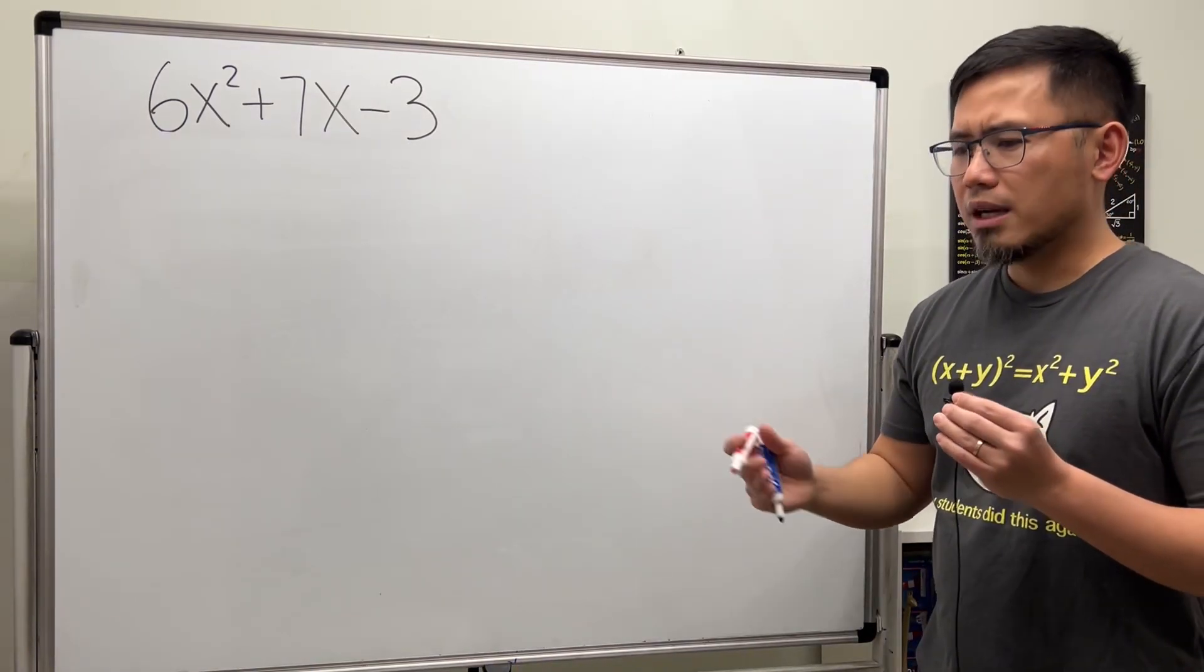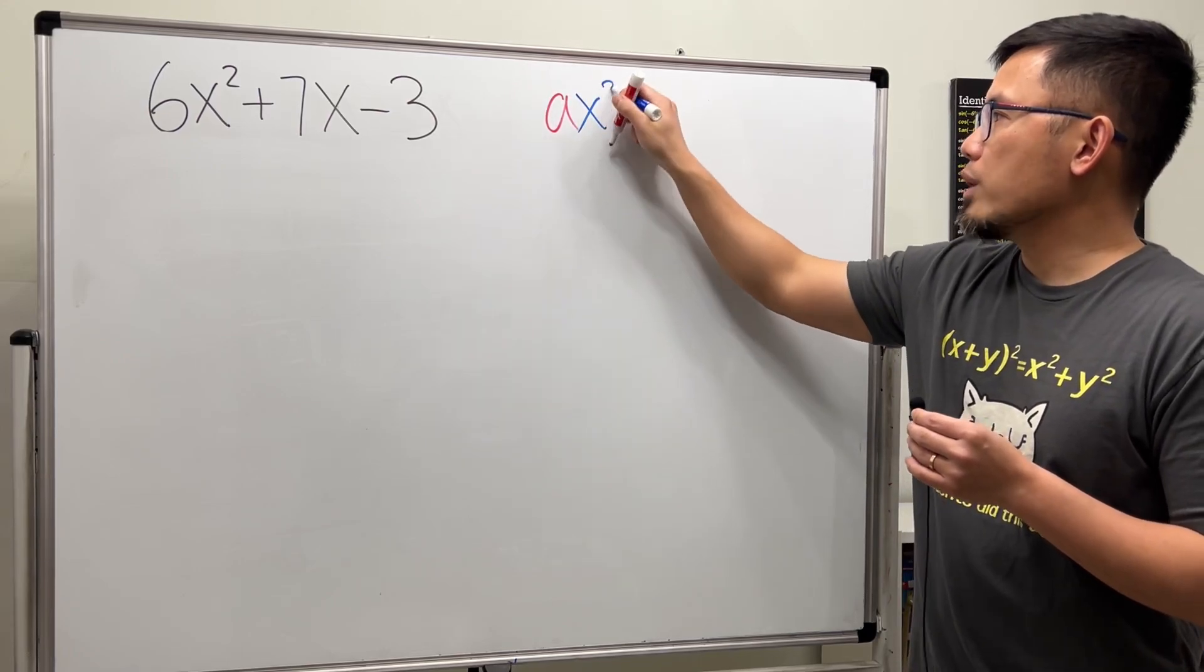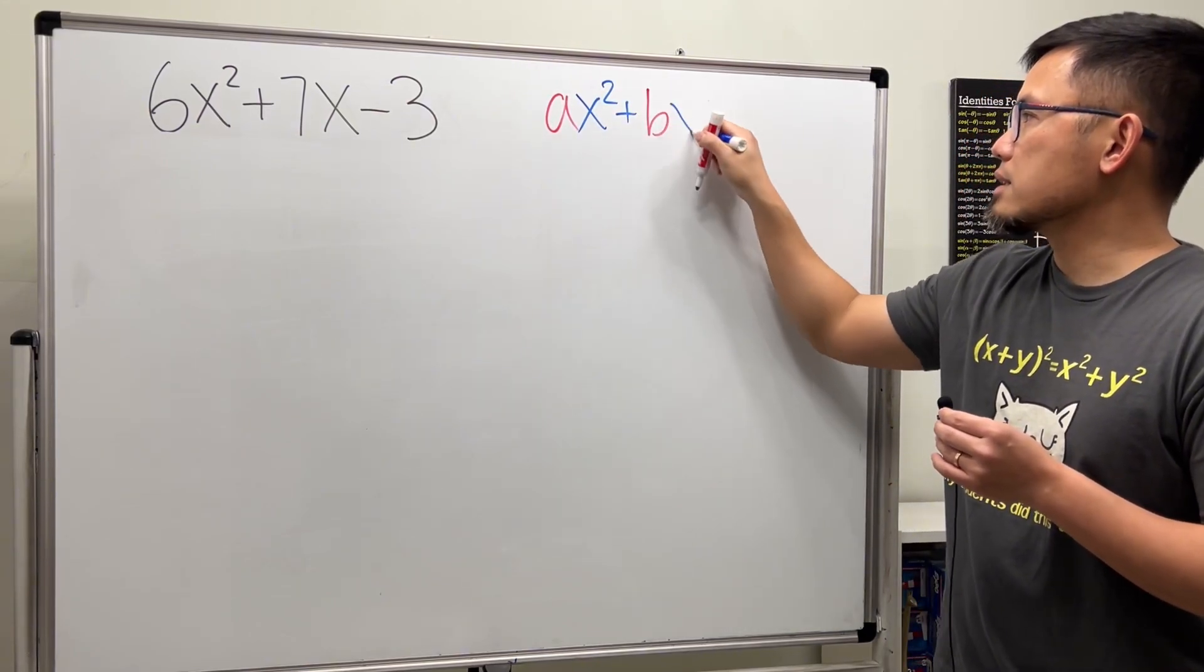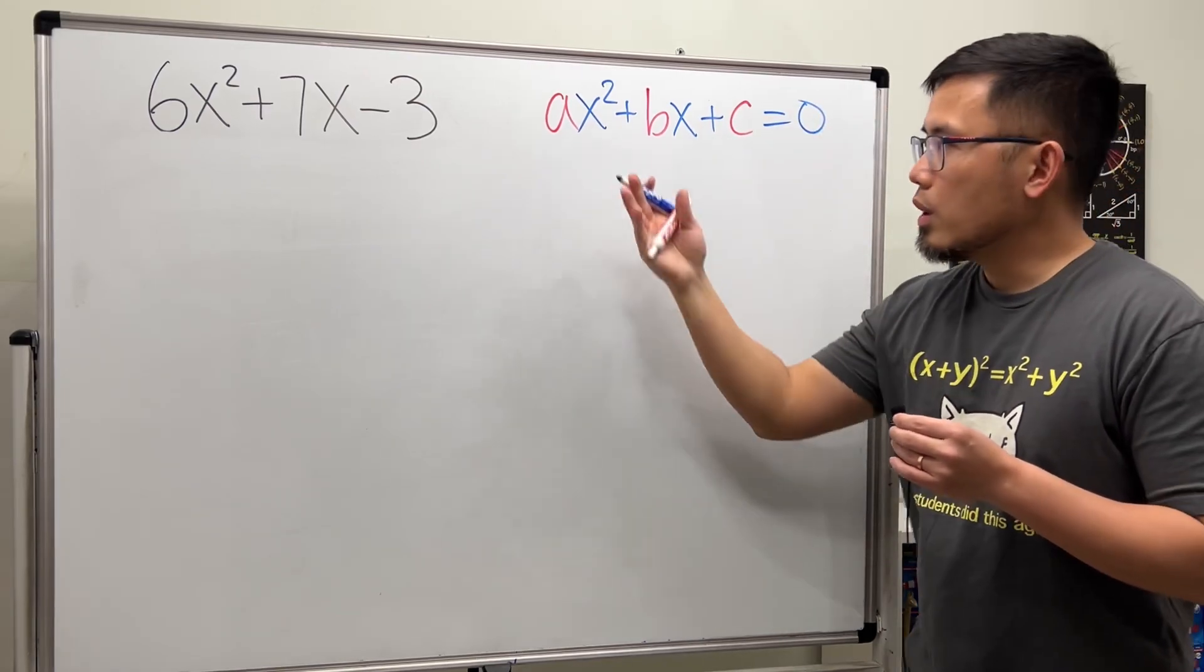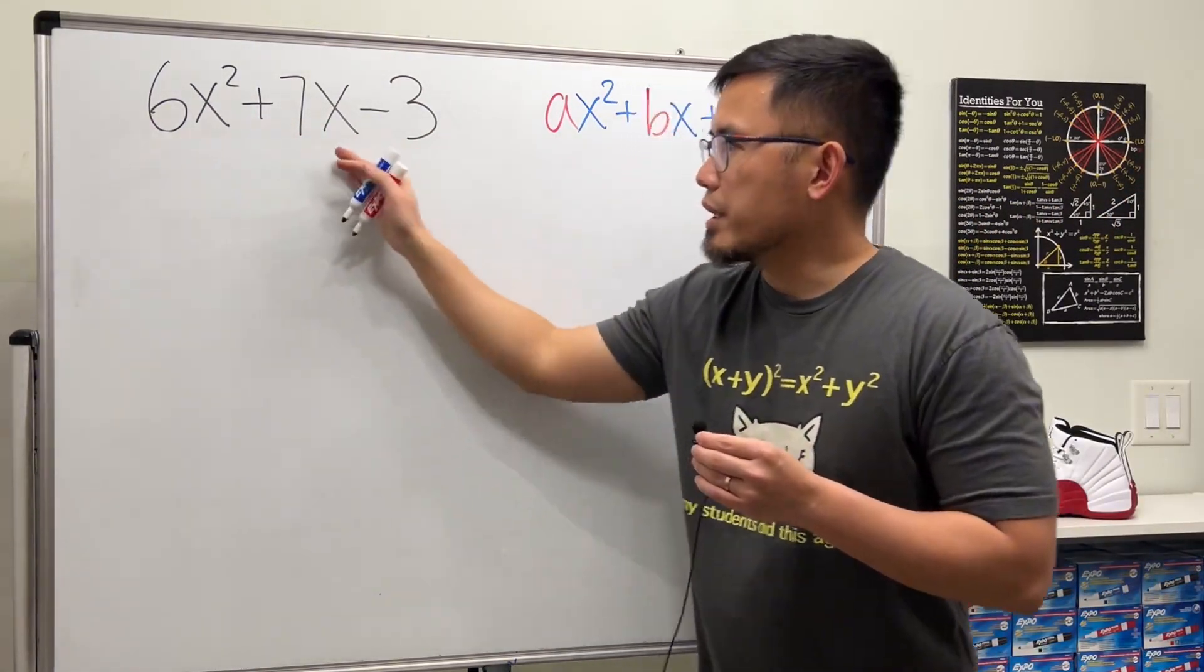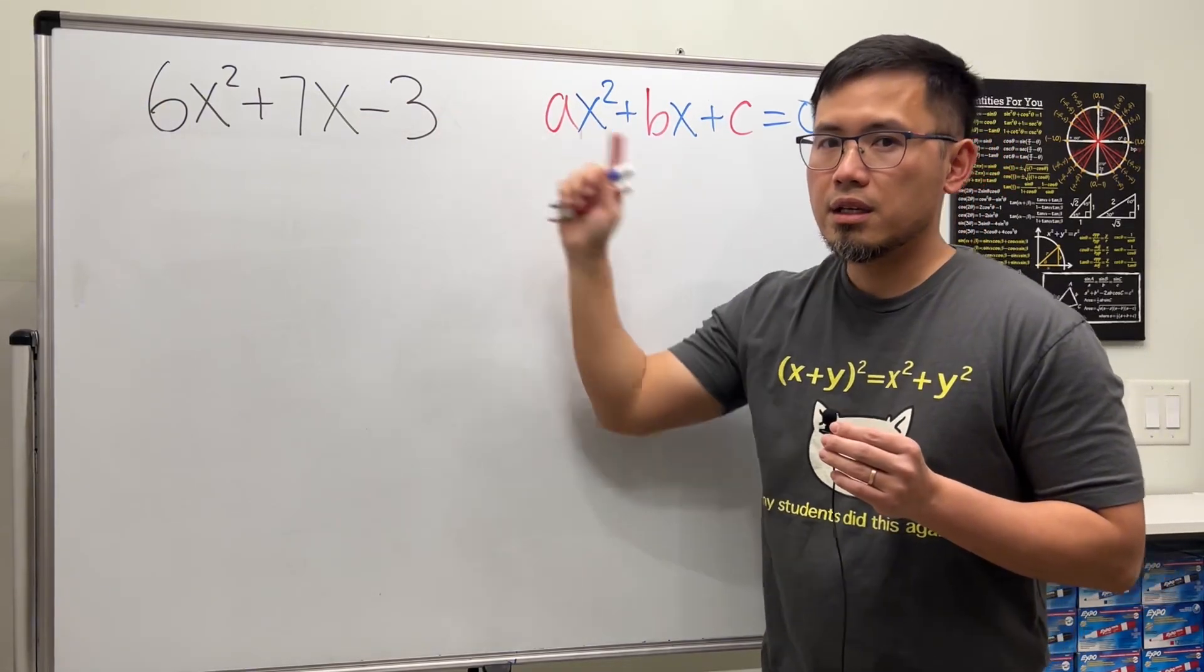For quadratic formula, it's usually for solving quadratic equations in the form of the standard form, right? But this right here is not an equation. This right here is just an expression. There's no equal to 0 or equal to anything. Keep that in mind.